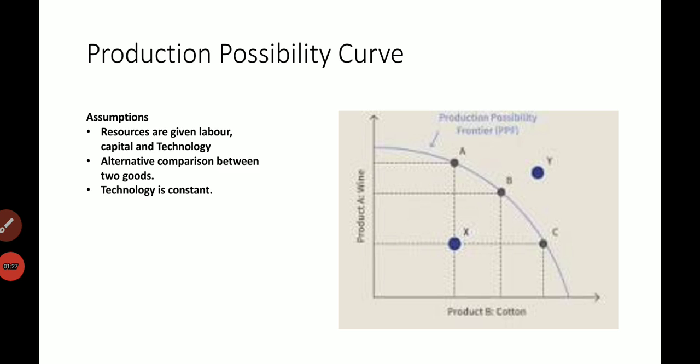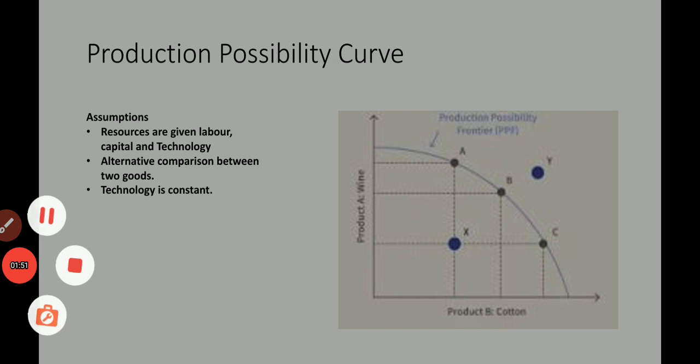The main condition of this PPC curve is that the producer has to use all the resources to produce these two goods. It means that at any cost, the producer has to finish the resources in producing these two goods.